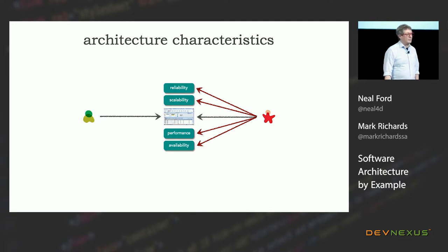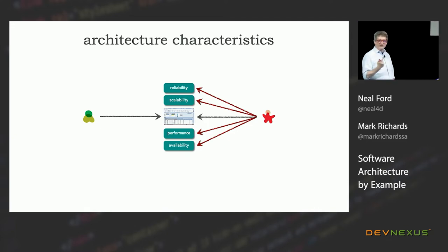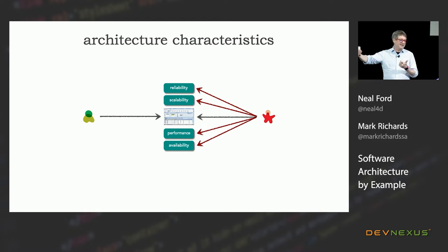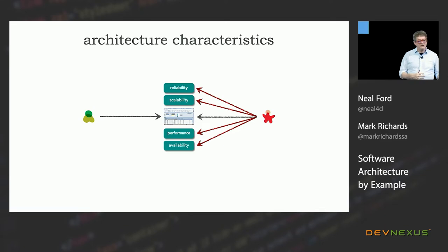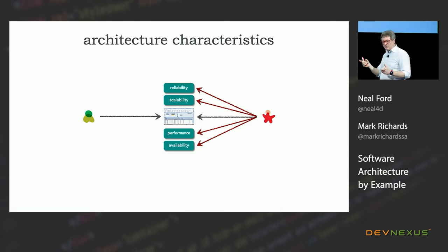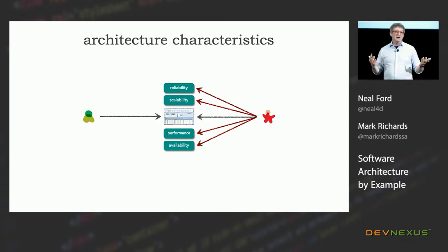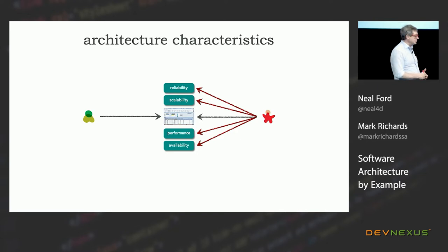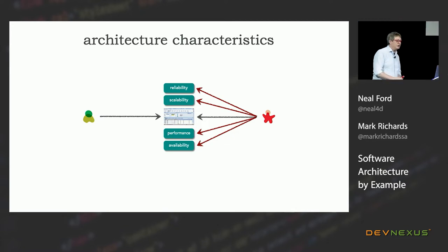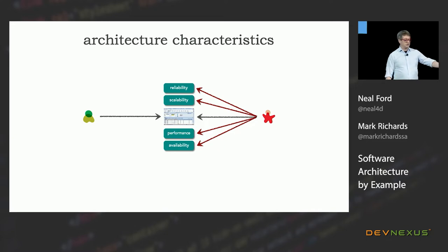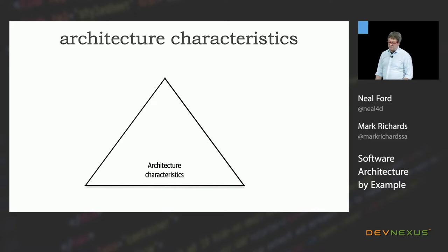Some people call them non-functional requirements, which we don't like as a name — 'non-functional' buries the lead. They're also called cross-cutting requirements, which we like better, but it gets tangled up with business or domain requirements. They're also called system quality attributes, but that makes it sound more like a QA assessment rather than one of the first things you do in software architecture. One of the first things you need to do is identify what these architecture characteristics are — the so-called 'ilities' of software architecture. Mark and I came up with our own definition in three parts.